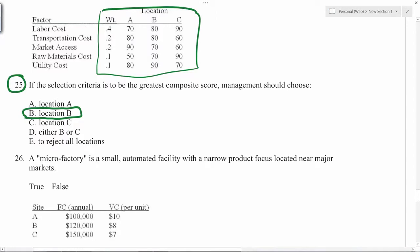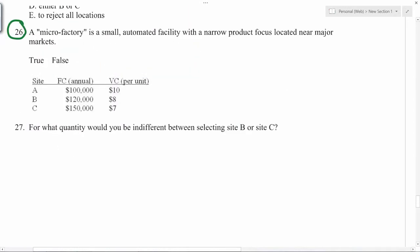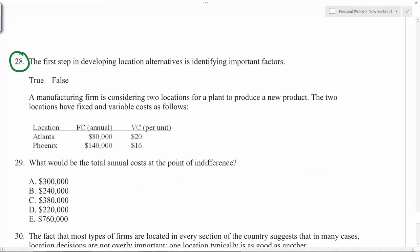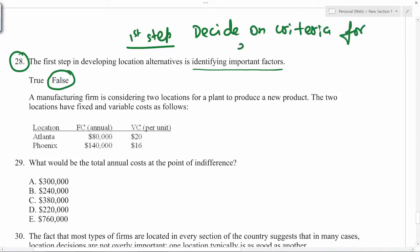Micro factory is a small automated facility with a narrow product focus - that is true. The point of indifference for B and C: we can use the equation. Fixed cost for B is 120,000 plus variable cost is 8 times quantity Q. For location C, 150,000 is the fixed cost, 7 is the variable cost, and quantity Q. First step in developing location alternatives is identifying important factors - that is false. The first step is always decide on criteria for evaluating alternatives.